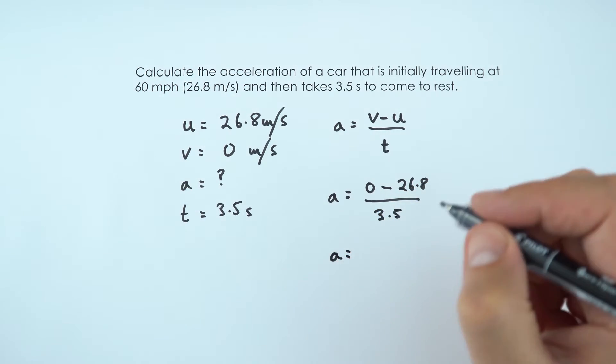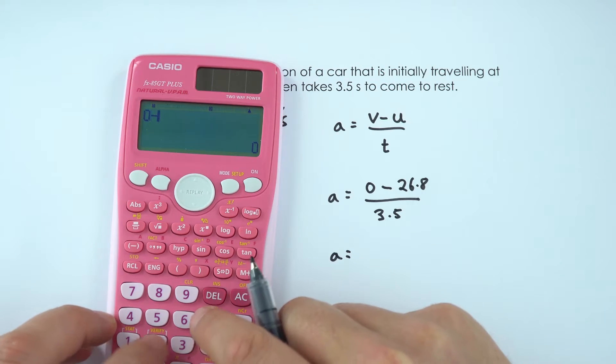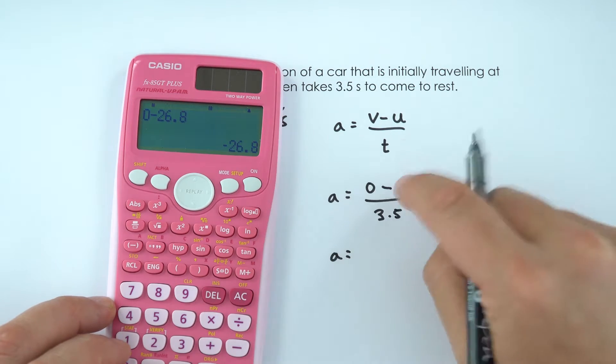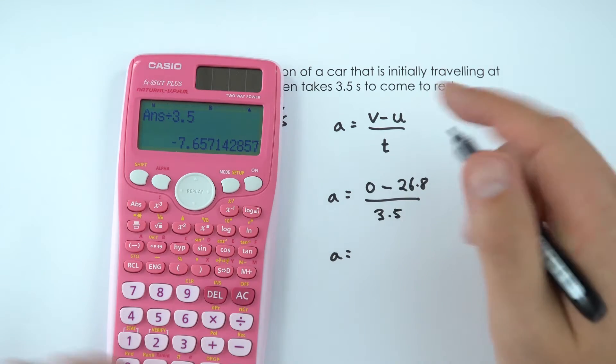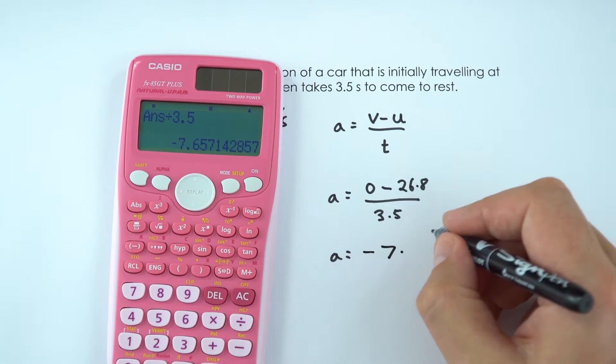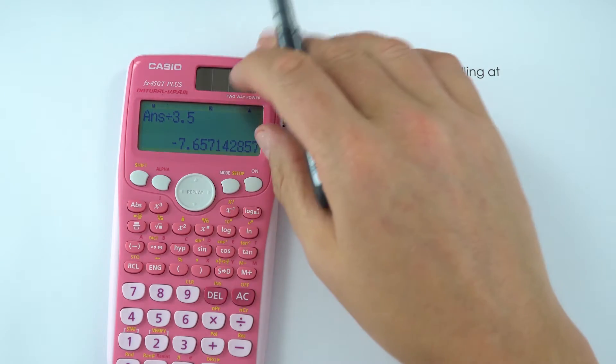So to work out this value of acceleration, 0 minus 26.8 is just minus 26.8, divide it by 3.5, and this gives us the value of minus 7.657.